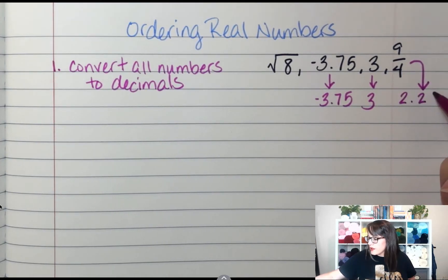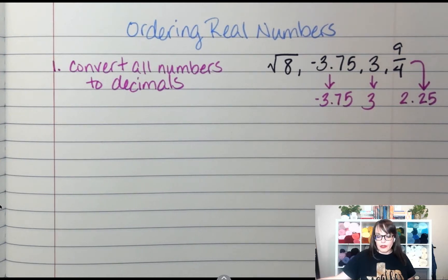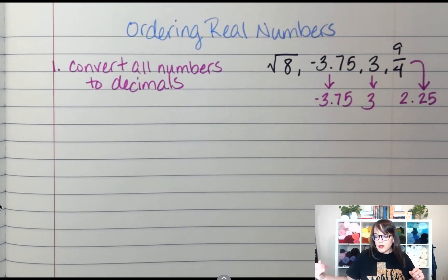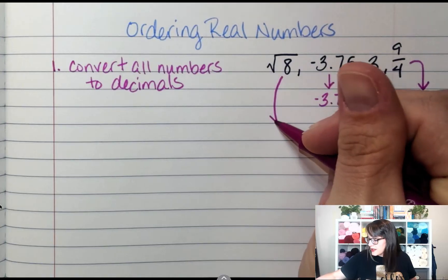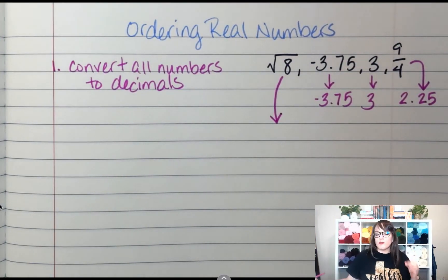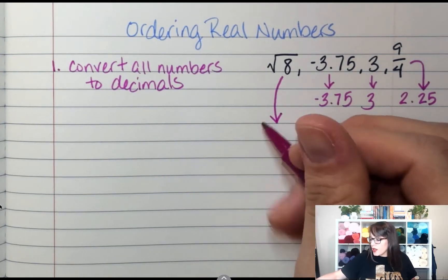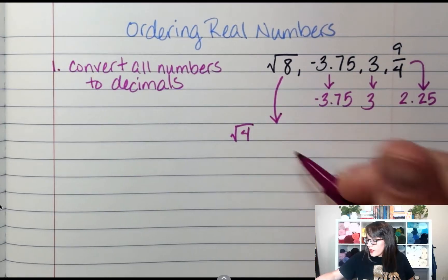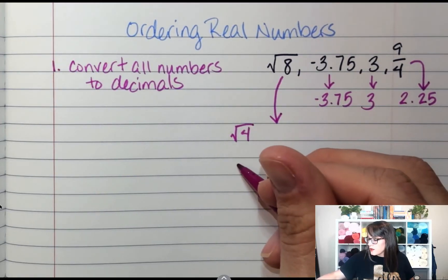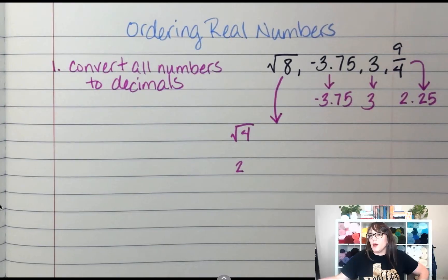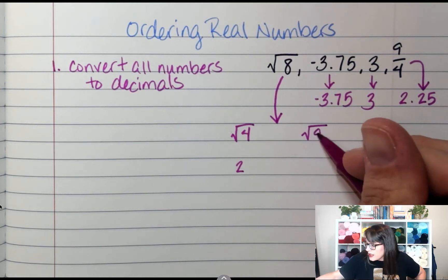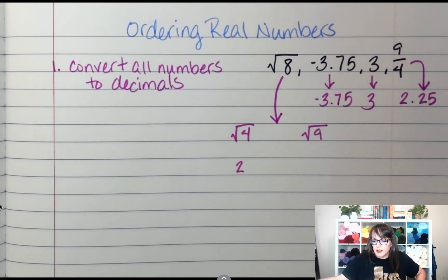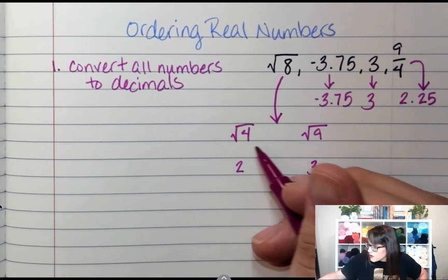Now when I deal with the square root of 8, save that one for last because we're going to kind of reteach last lesson. What is the smaller square root that I know about? Square root of 4. What is the square root of 4? 2. What's the next one up above 8? Square root of 9. What is the square root of 9? 3.